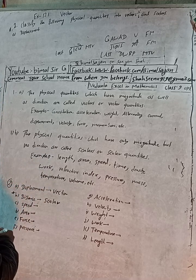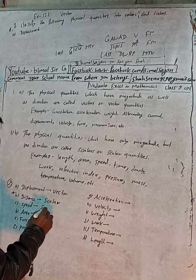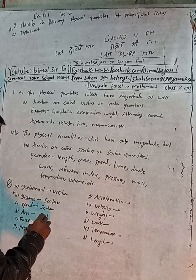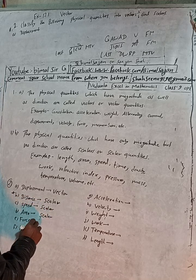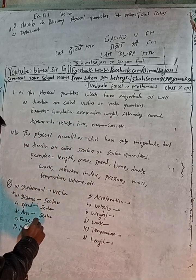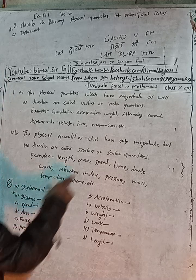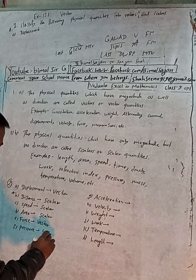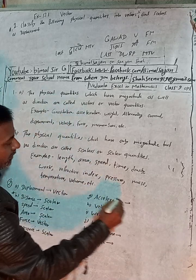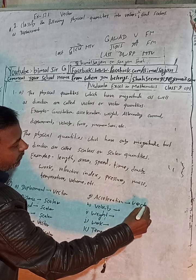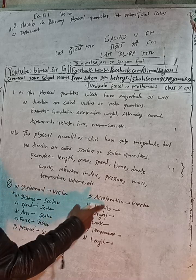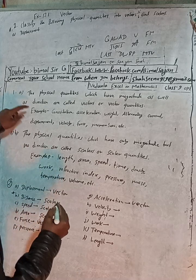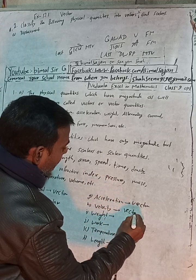Speed is a scalar quantity. There are scalar and vector quantities — scalar math and vector quantities. Velocity is a vector quantity.